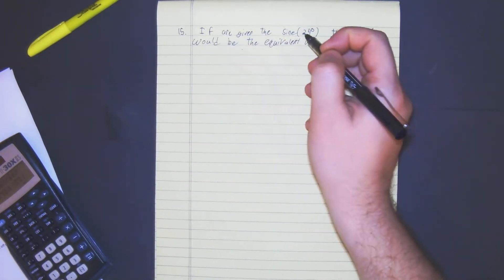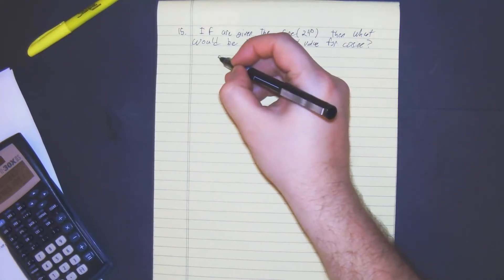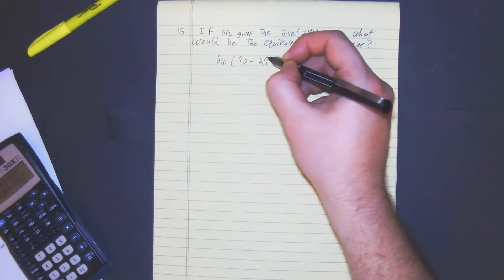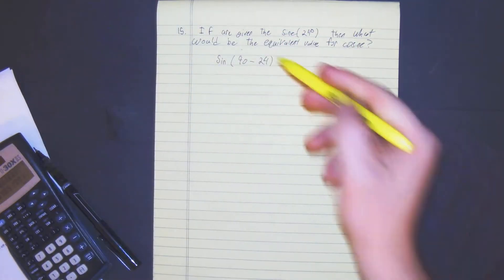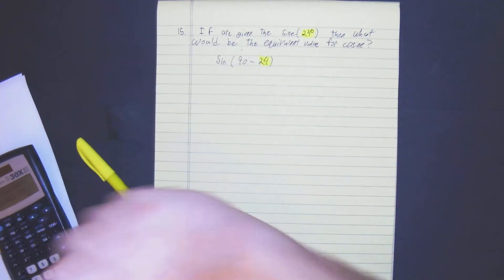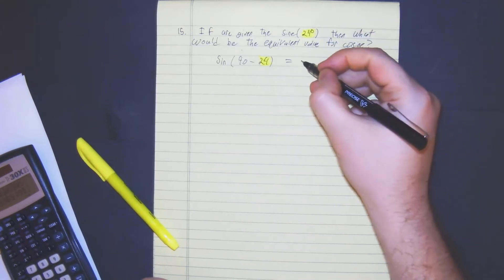So the way you can find it would be we're given sine of 24 degrees. So we would do the sine of 24 degrees, so sine of 90 minus the given would equal the cosine.